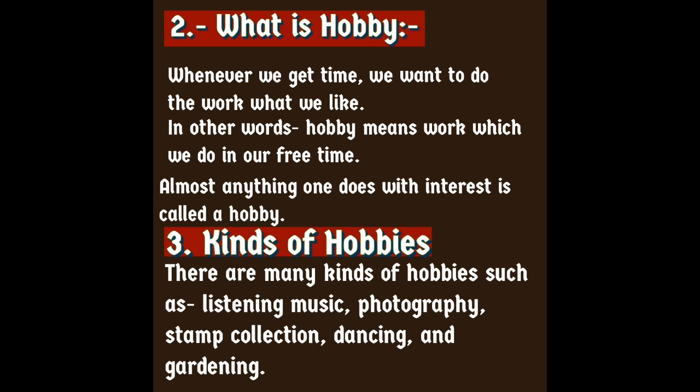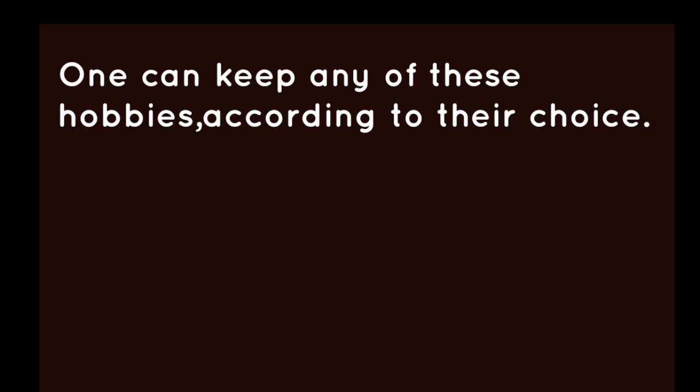Kinds of Hobbies: There are many kinds of hobbies such as listening to music, photography, stamp collection, dancing, and gardening. 'Stamp collection' means टिकट संग्रह करना, 'dancing' means नृत्य, and 'gardening' means बगीचा तैयार करना. One can keep any of these hobbies according to their choice.